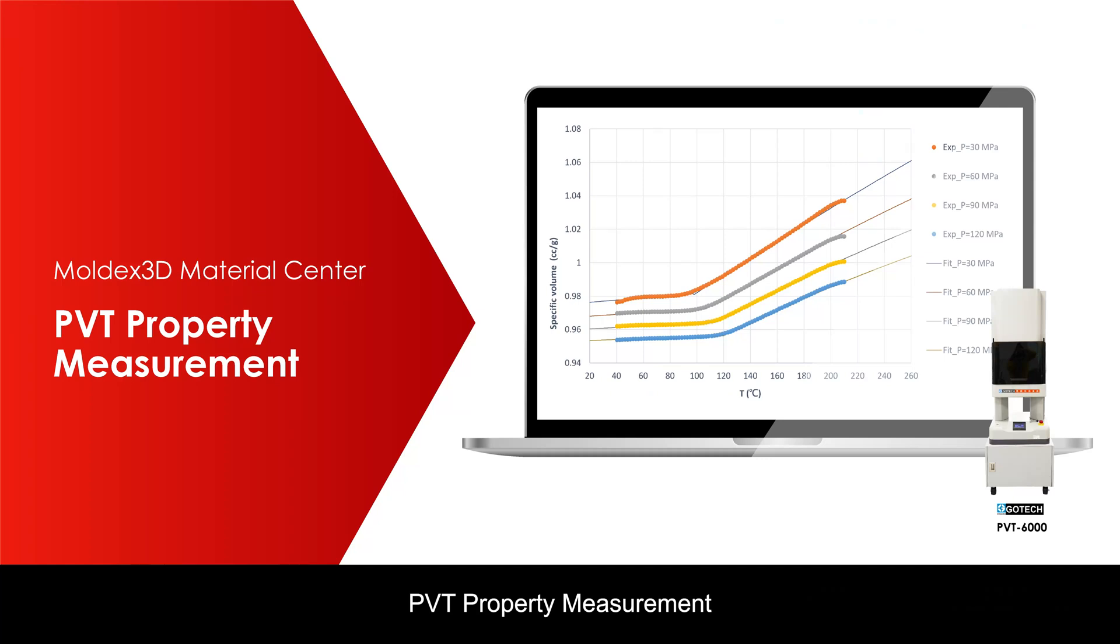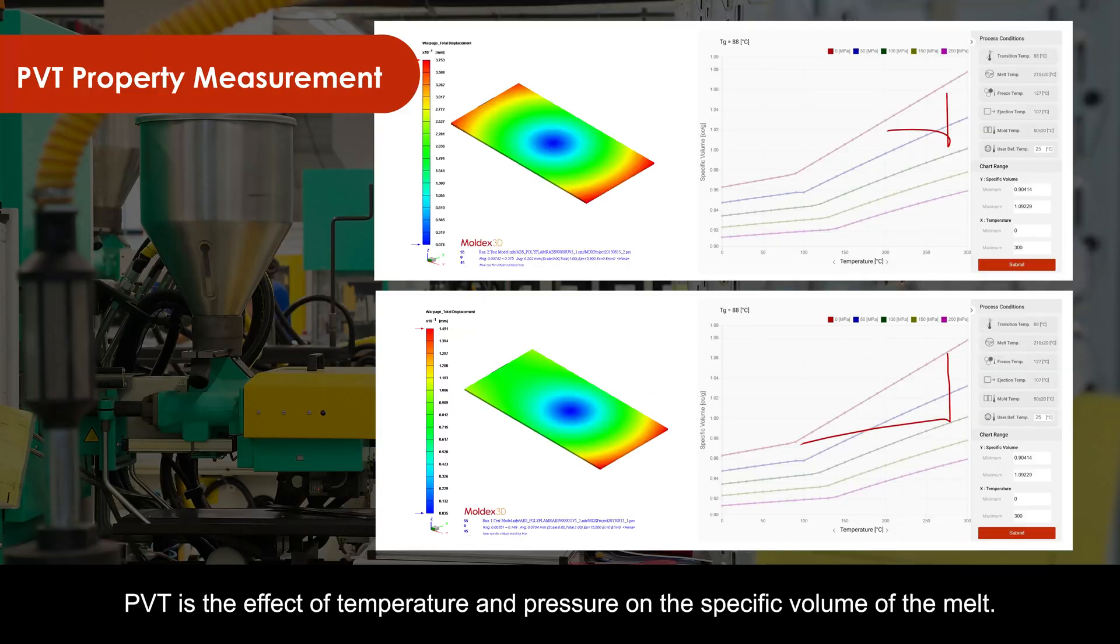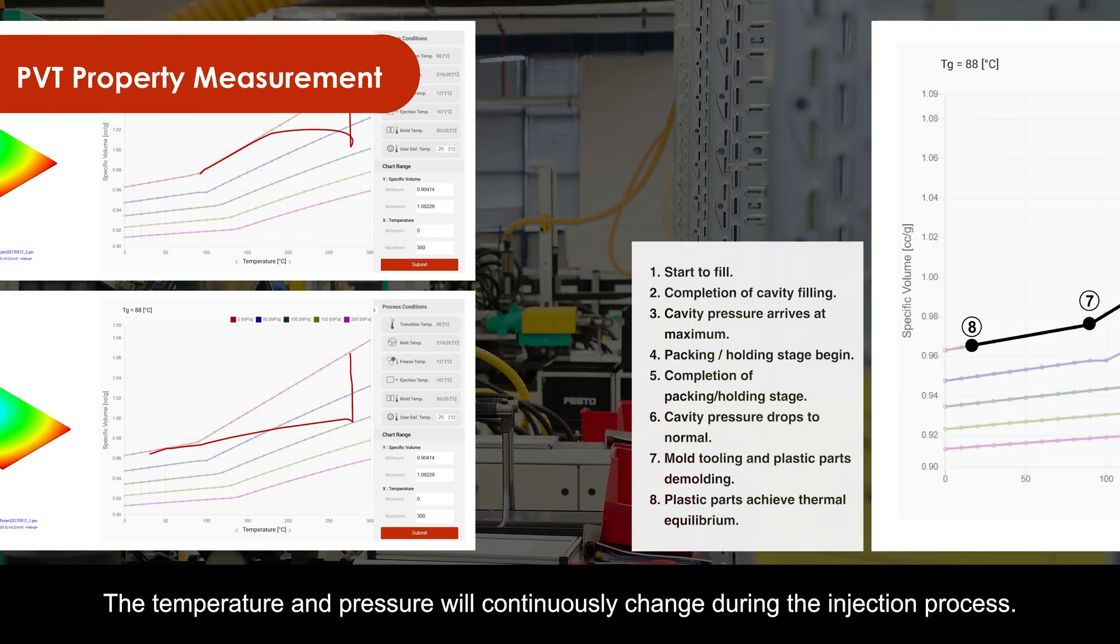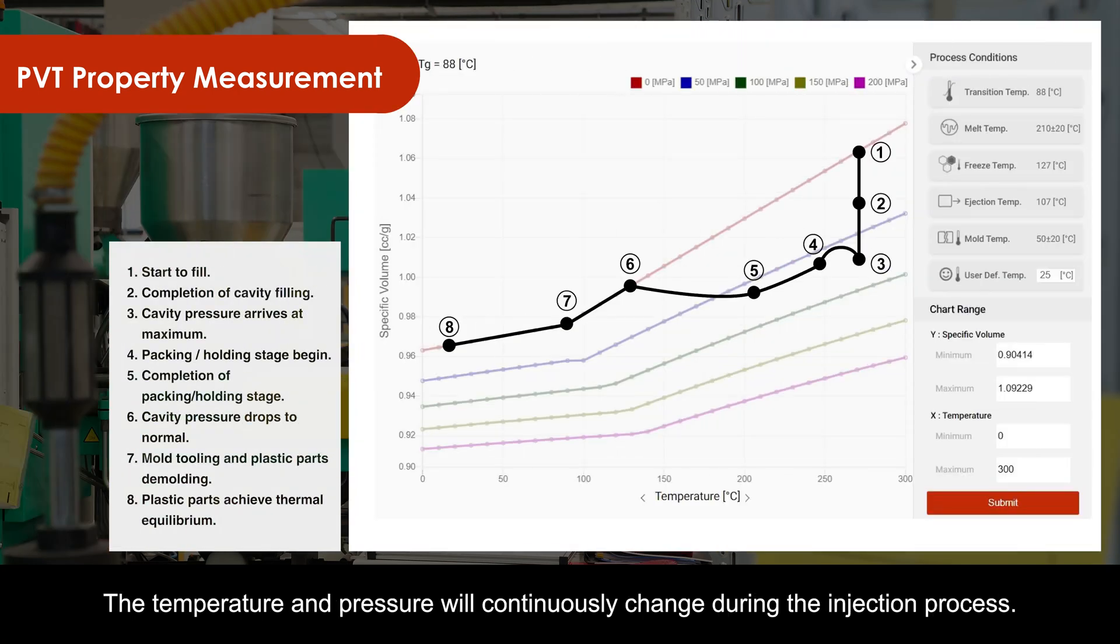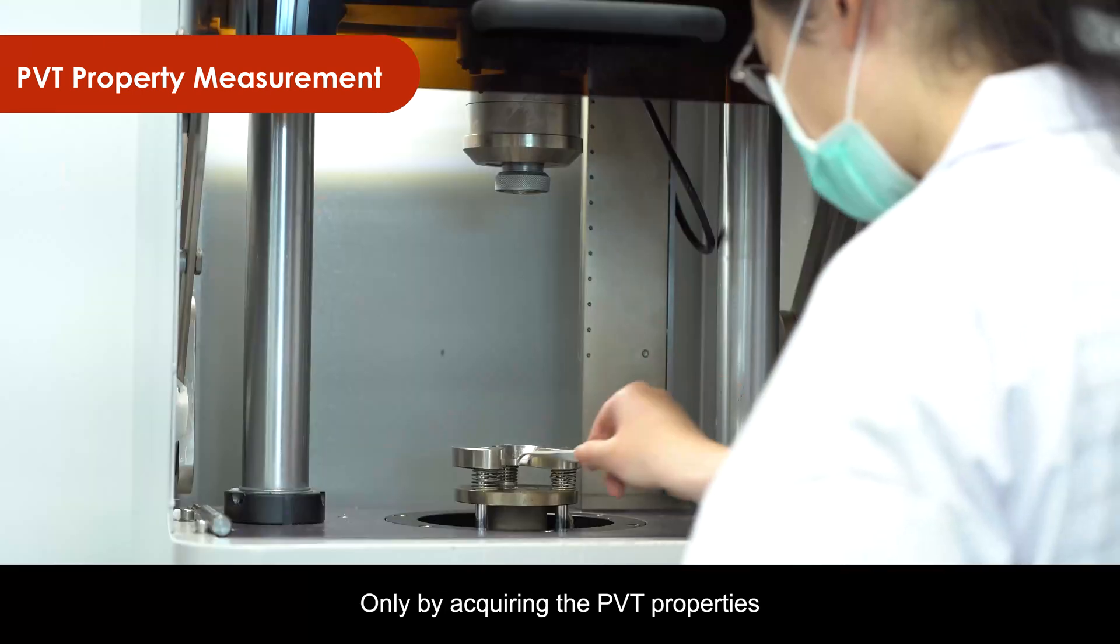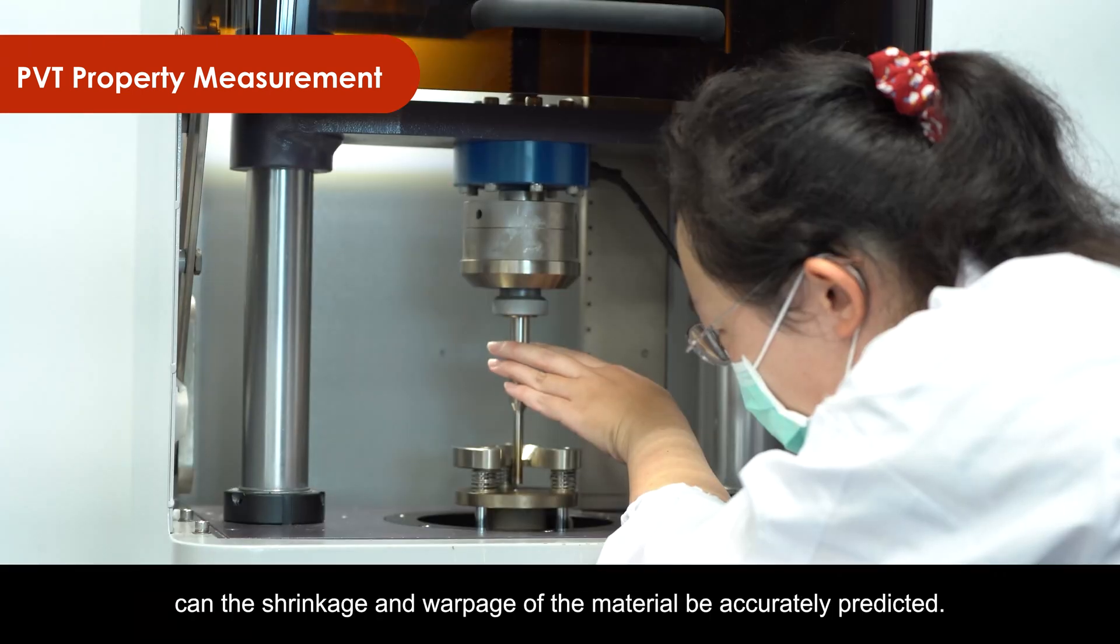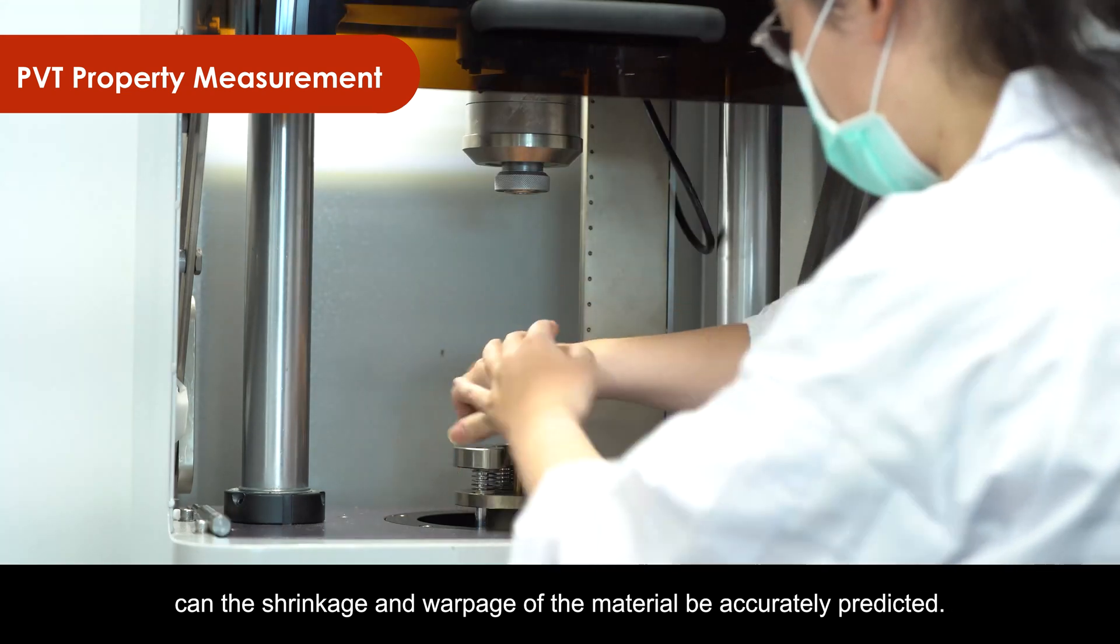PVT properties measure the effect of temperature and pressure on the specific volume of the melt. Temperature and pressure continuously change during the injection process. Only by acquiring PVT properties can material shrinkage and warpage be accurately predicted.